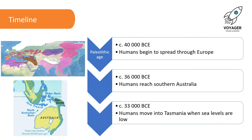As you can see from the map, this shows the spread of humans from around 40,000 BCE up into northern Europe. They progressed from Africa, travelled through the Middle East and the Mediterranean into Europe, across to Siberia and northern Russia, and down to India and Southeast Asia. By about 36,000 BCE, humans reached southern Australia, taking a very long time to travel from the top of Australia to the southern parts. Around 33,000 BCE, humans moved into Tasmania when sea levels were low and Tasmania was still connected to the mainland.